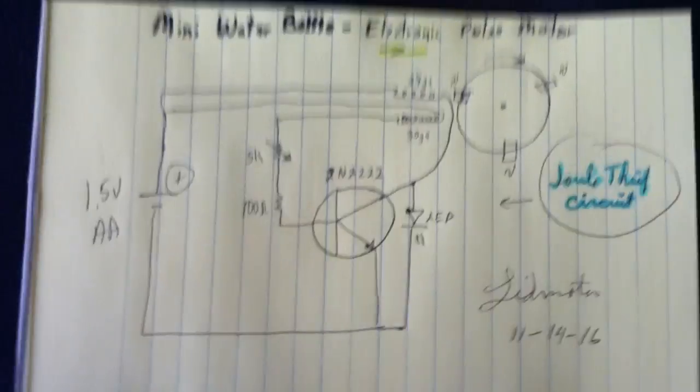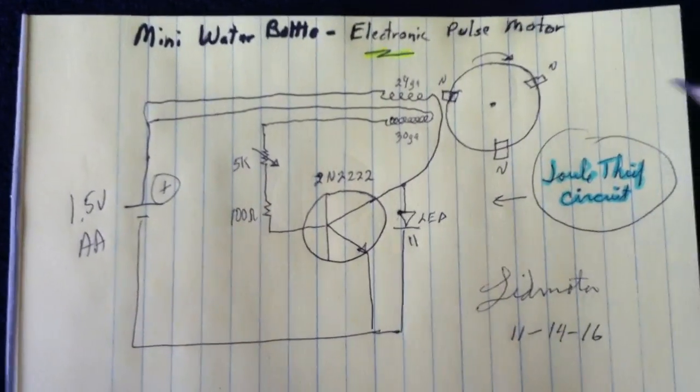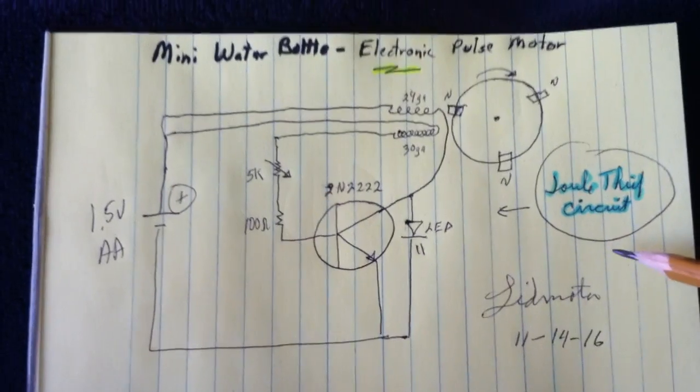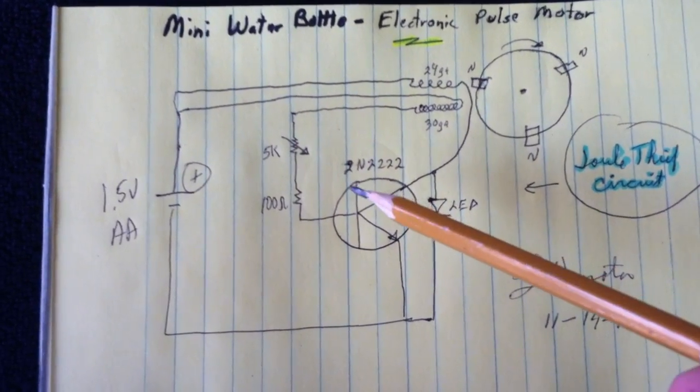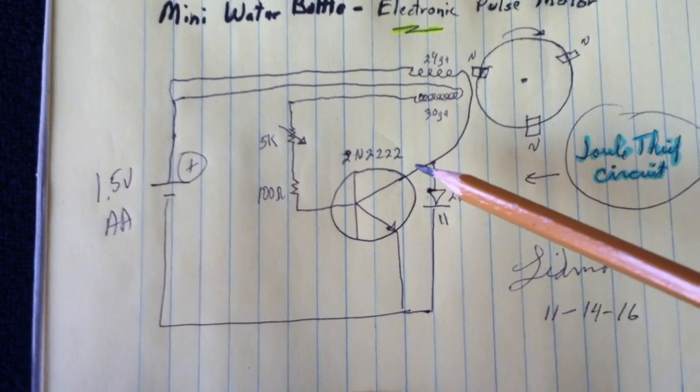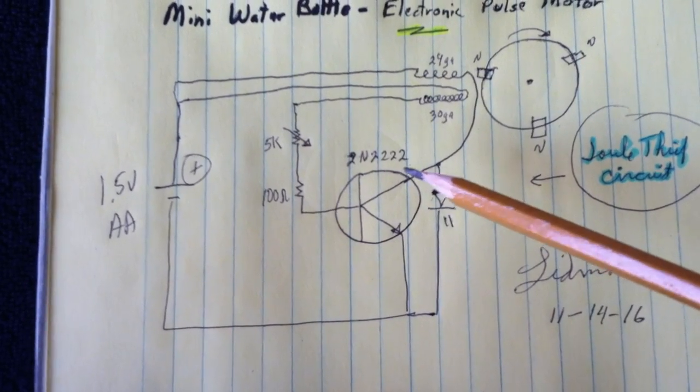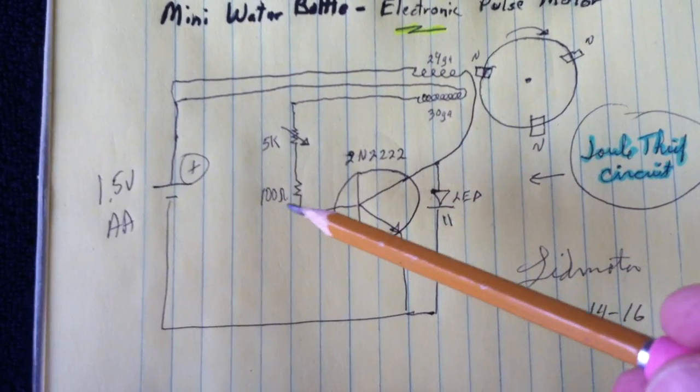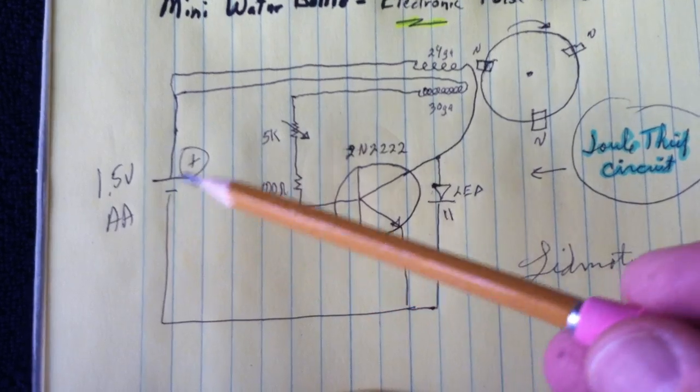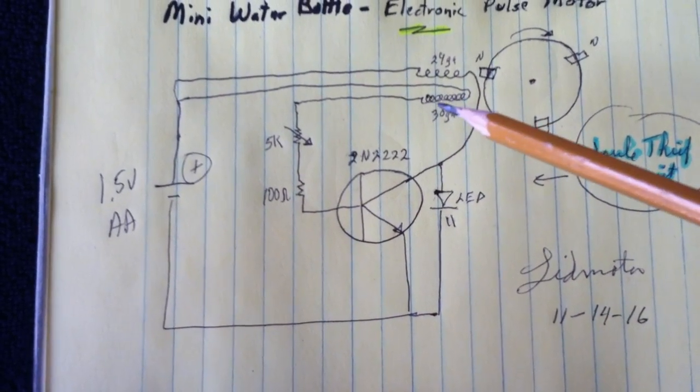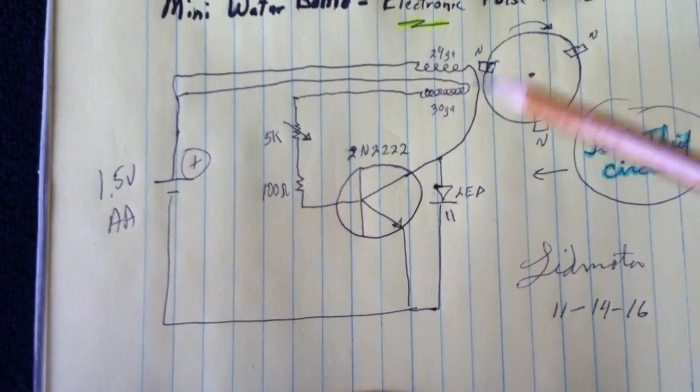This is the circuit I'm using here. Like I say, it's a jewel thief circuit using an NPN 2N2222 transistor, 100 ohm resistor, 5k potentiometer, just a double A battery. The way jewel thieves work is you've got two windings, usually on a